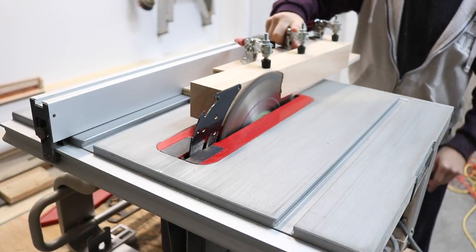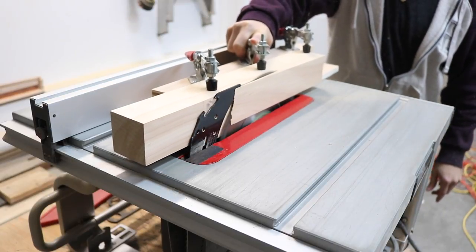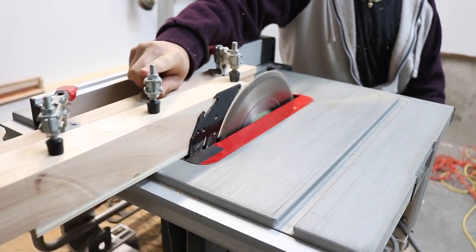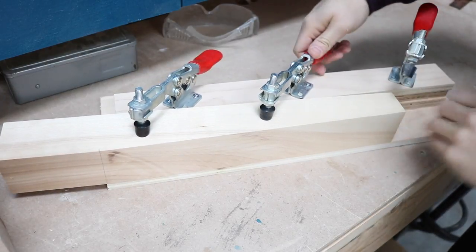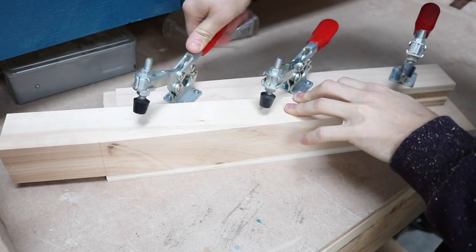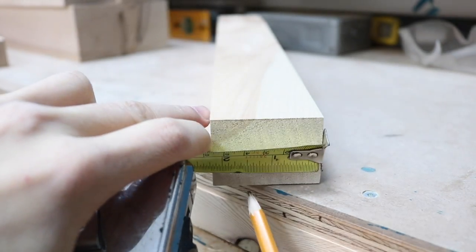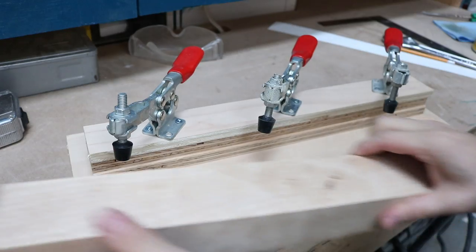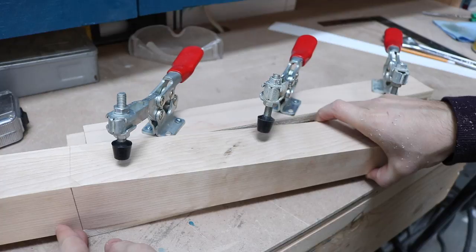To help me make these cuts I screwed some lever clamps to a piece of plywood to hold the legs at the proper angle as I pass it through the table saw. All I needed to do was to align my markings with the edge of the plywood to get the same repeatable cuts for all of the legs.